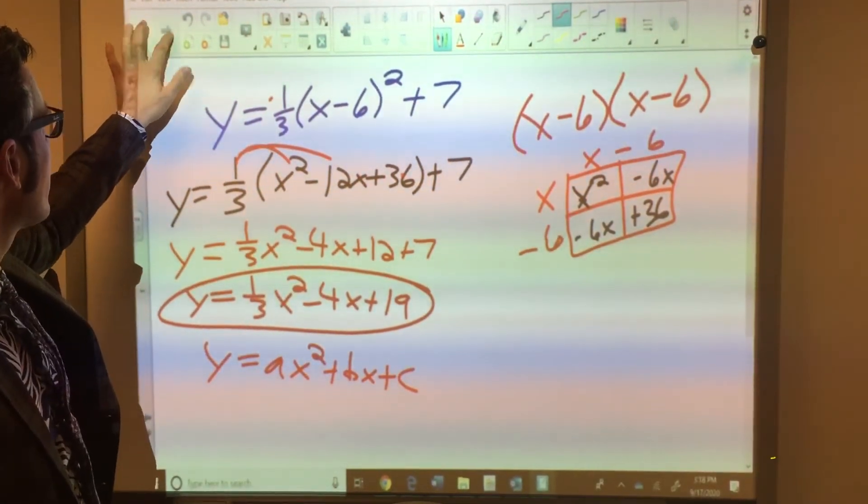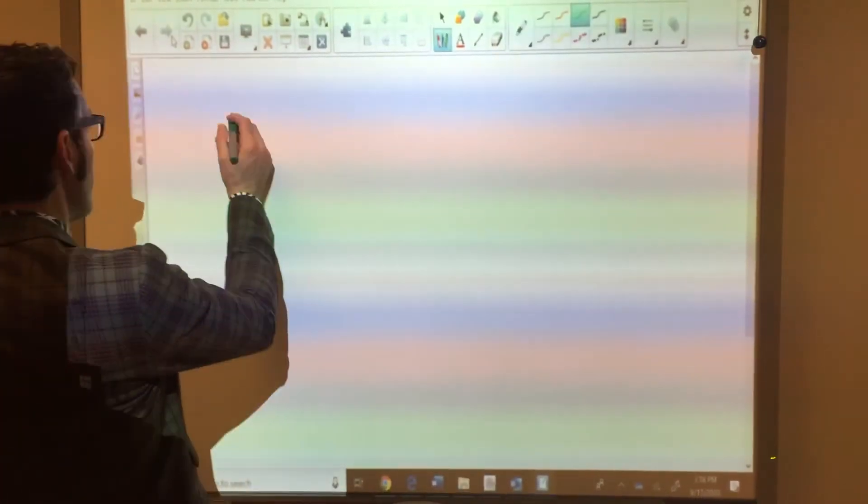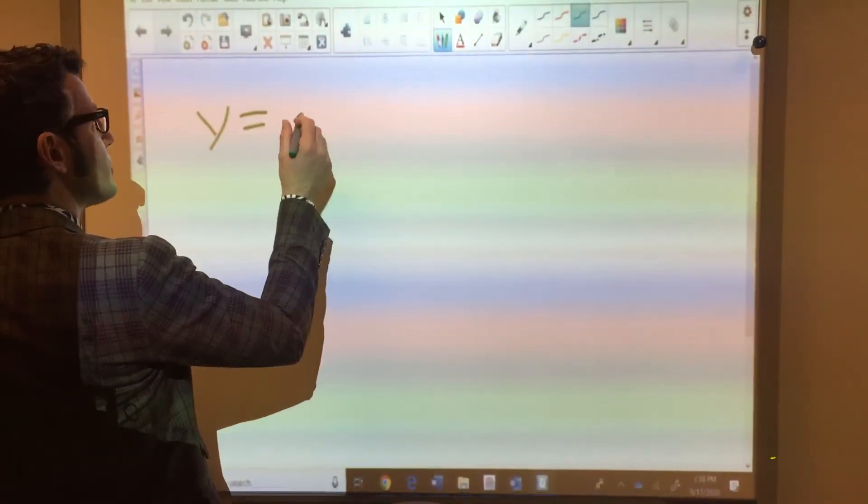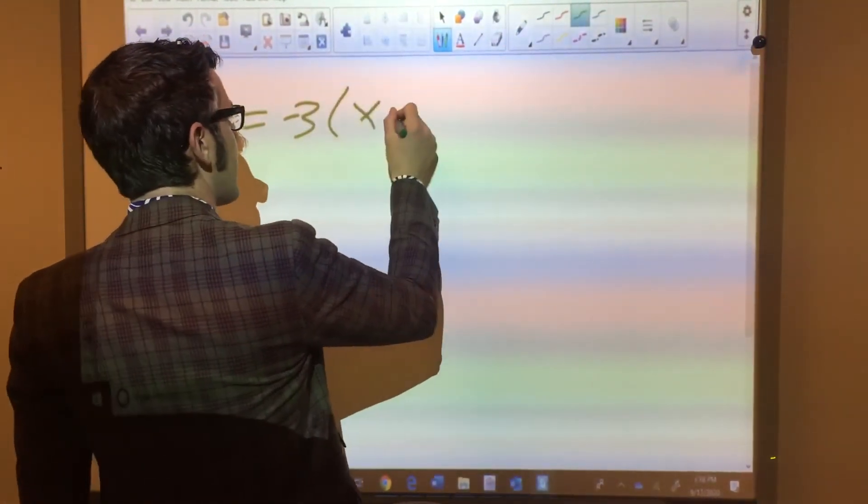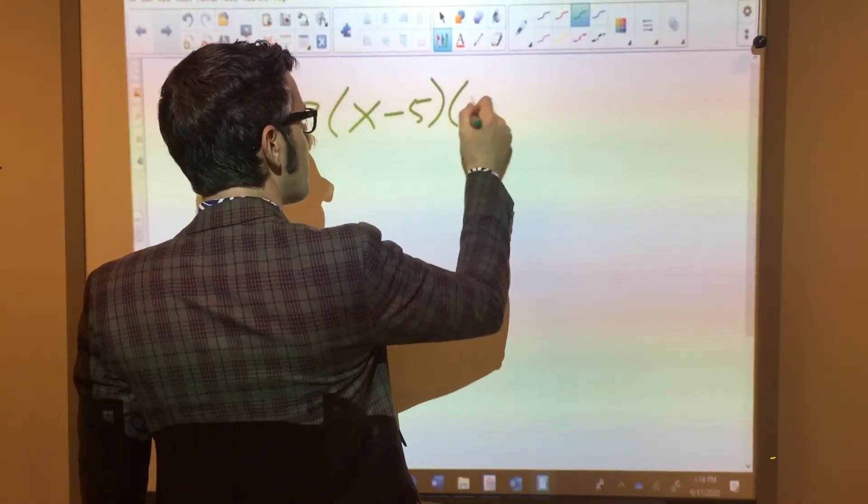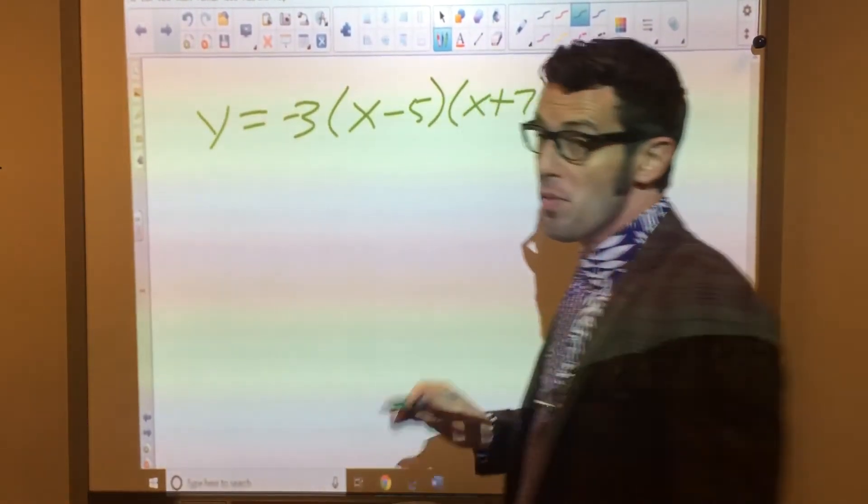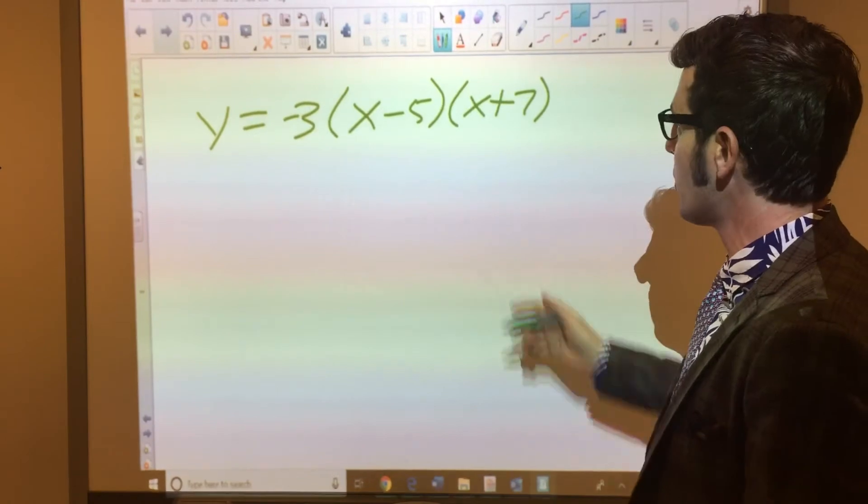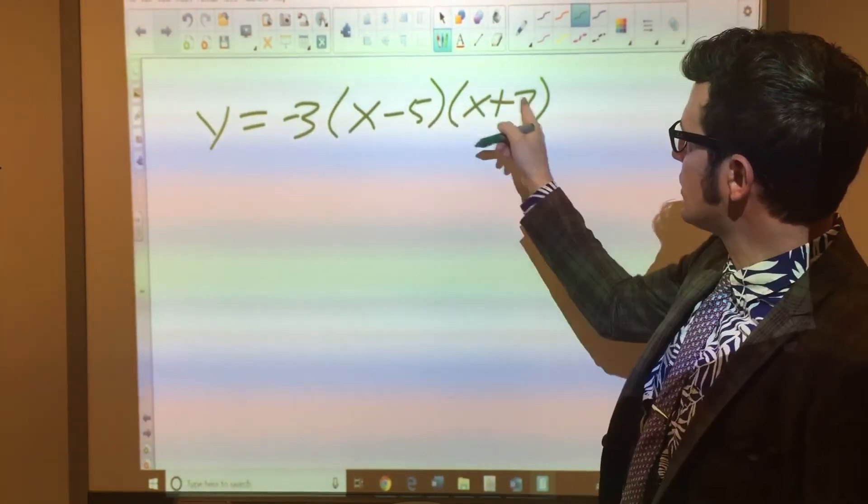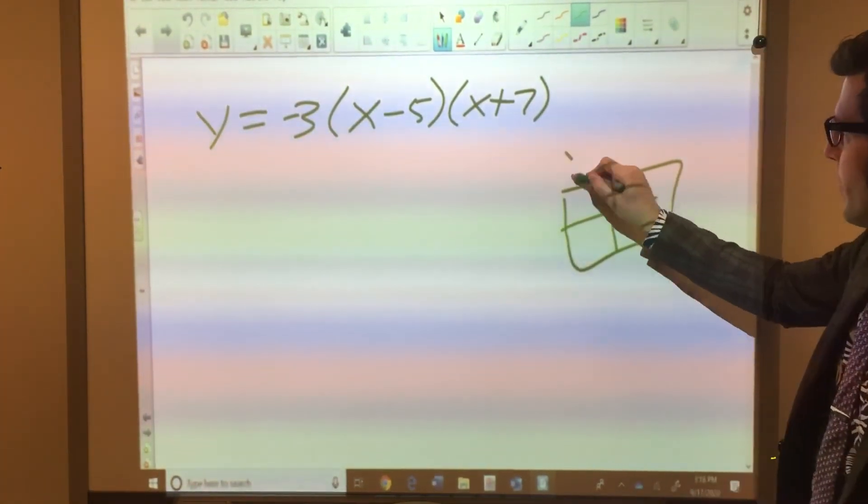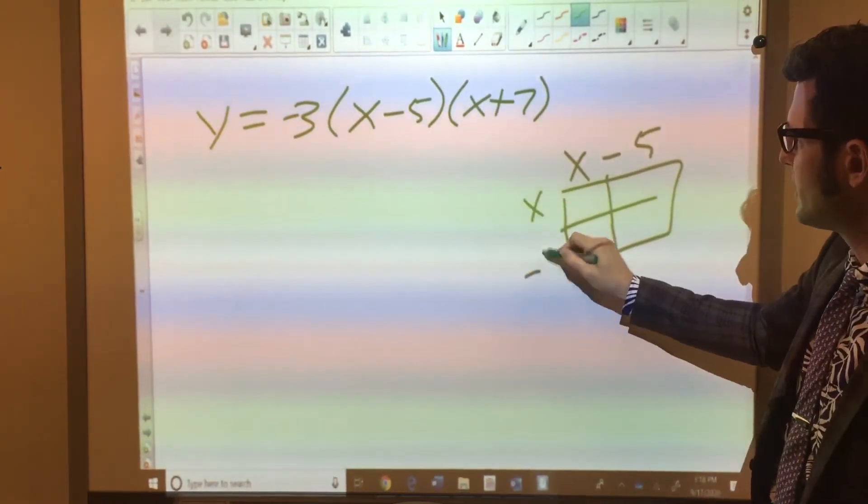Let's take a look at an intercept form problem. What if we had y equals -3(x - 5)(x + 7)? It's really almost the same thing, it's actually a little shorter. I'm going to, again, foil these two things, or draw a box, and multiply them. So, that's (x - 5)(x + 7).